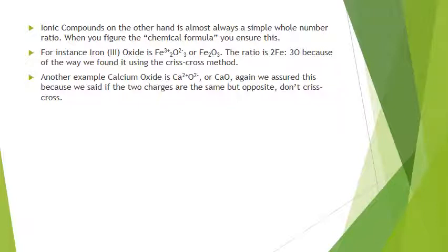Ionic compounds are almost always a simple whole number ratio. When we figure out the chemical formula for ionic compounds, we ensure this. For instance, iron(III) oxide: Fe3+ and O2- crisscross the charges to get Fe2O3 — two Fe's for every three oxygens, the smallest whole number ratio. Calcium oxide: Ca2+ and O2- — don't crisscross when charges are the same. So for ionic compounds, the empirical and molecular formulas are essentially the same, unlike covalent compounds.